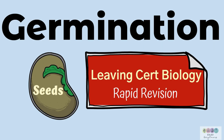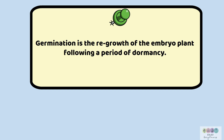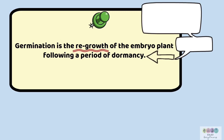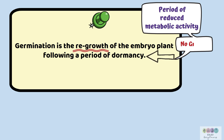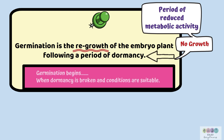Germination is the regrowth of the embryo plant following a period of dormancy. It's very important that you state the regrowth of the embryo plant, because it once was growing. The seed, which is the embryo plant in the food store, just went into dormancy — a period of reduced metabolic activity where there is no growth. Germination will begin when dormancy is broken and conditions are favourable.